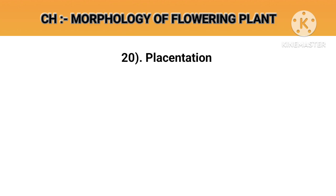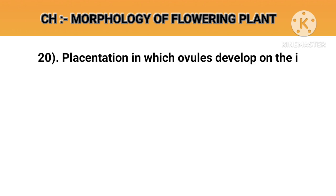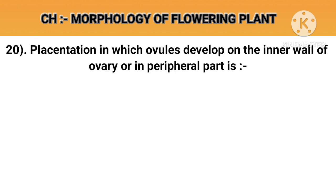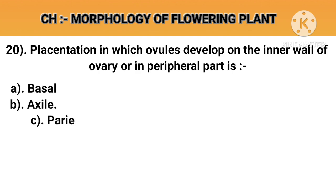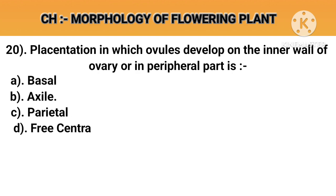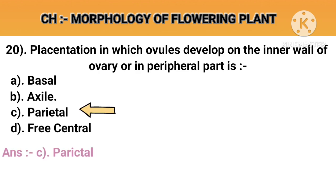Question number 20. Placentation in which ovules develop on the inner wall of the ovary or in the peripheral part is. Option A: Basal. Option B: Axile. Option C: Parietal. Option D: Free central. Answer C: Parietal.